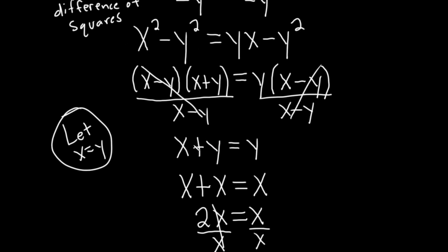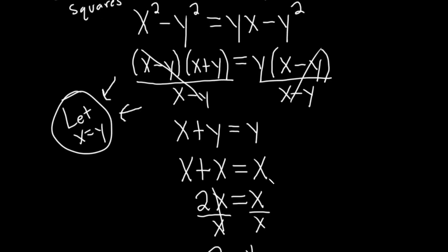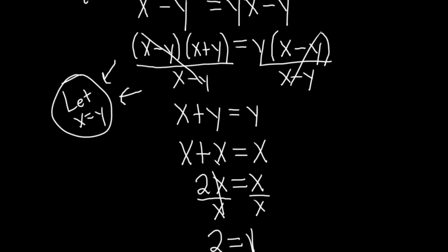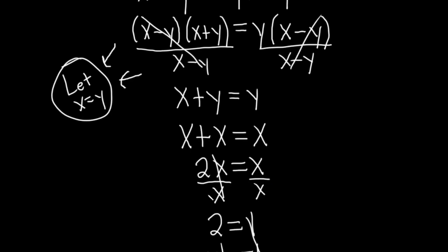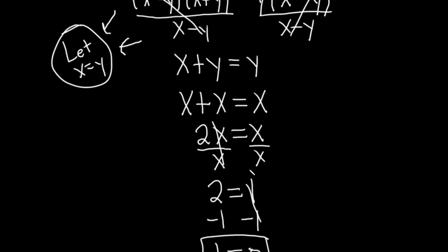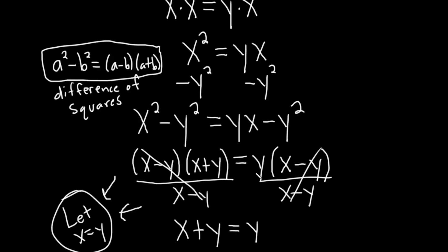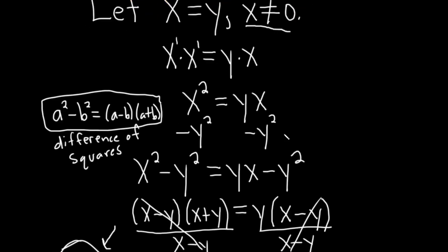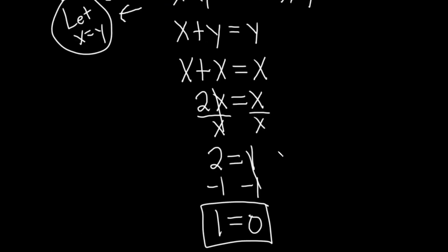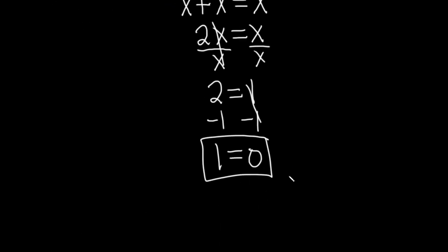We go back to our original assumption that x equals y and replace the y with x, giving x plus x equals x, or 2x equals x. Then we divide by x — which is not zero — and get 2 equals 1. Subtracting 1 from both sides gives 1 equals 0, and then the world explodes.